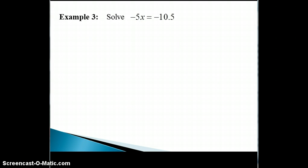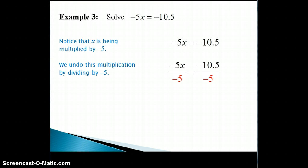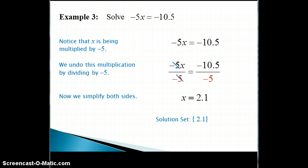Here's an equation where x is being multiplied by negative 5. We can undo this multiplication by dividing both sides by negative 5 to get x by itself. We simplify both sides to obtain our solution, which is x equals 2.1. Thus this equation has a solution set that includes one solution of 2.1.